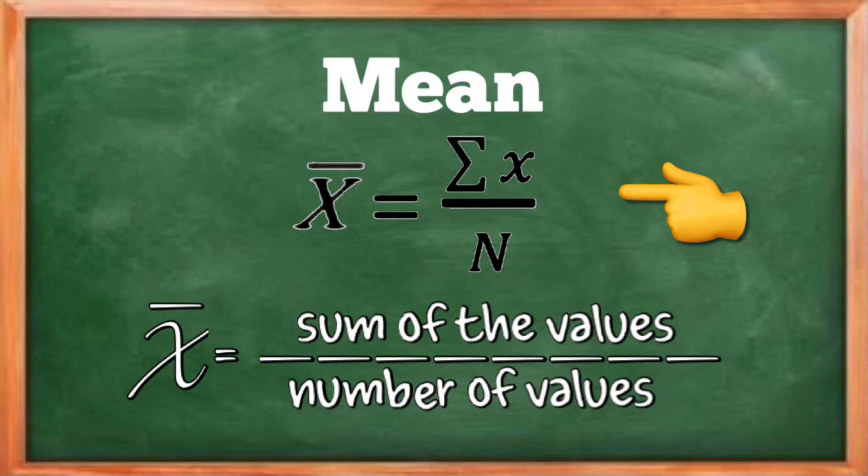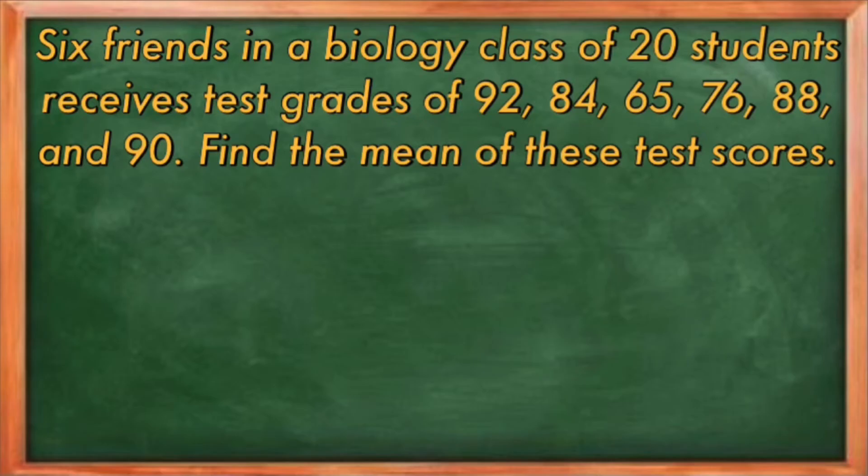To understand clearly, let us have this example. Six friends in a biology class of 20 students receive test grades of 92, 84, 65, 76, 88, and 90. Let us try to find the mean of these test scores.